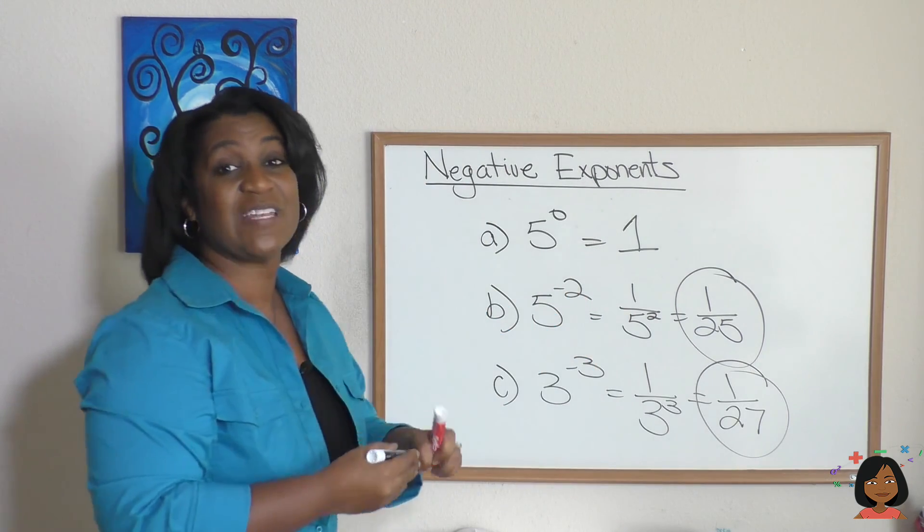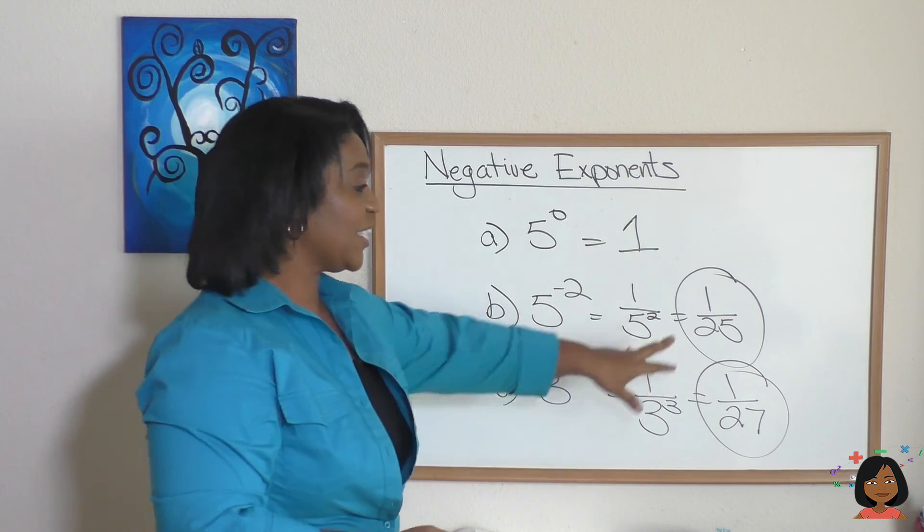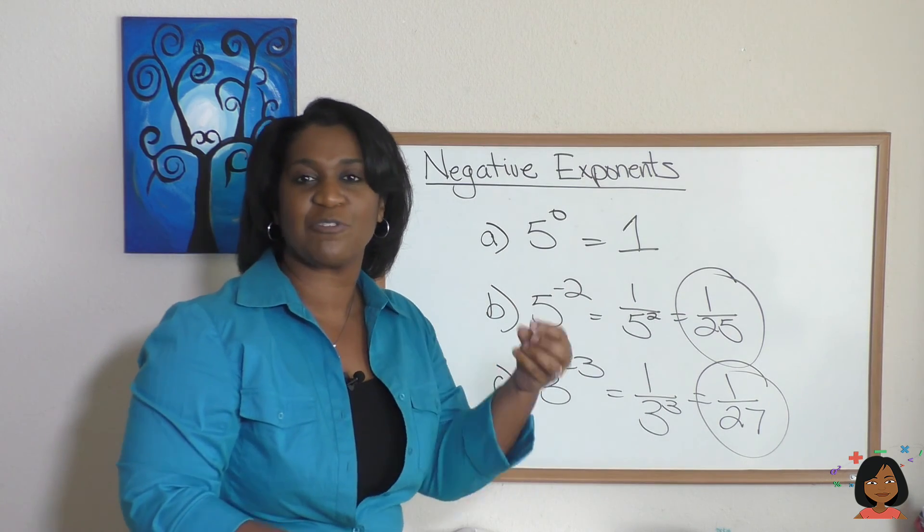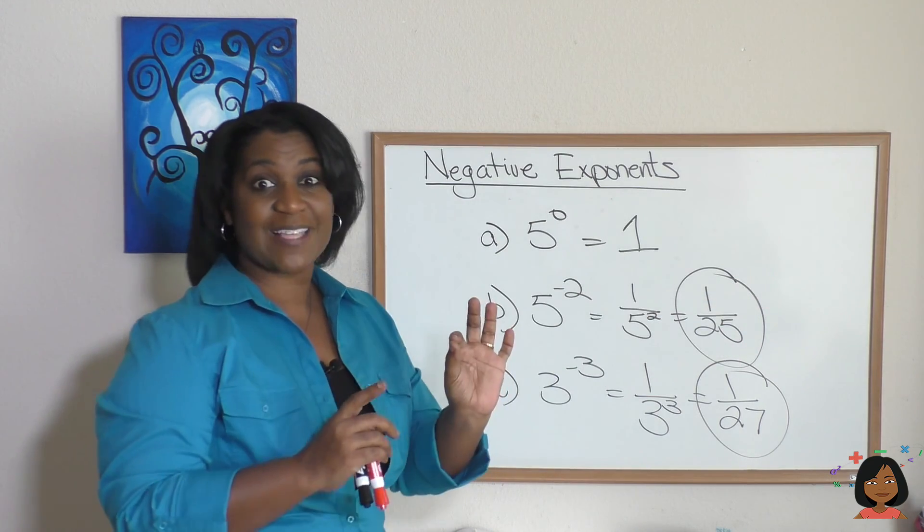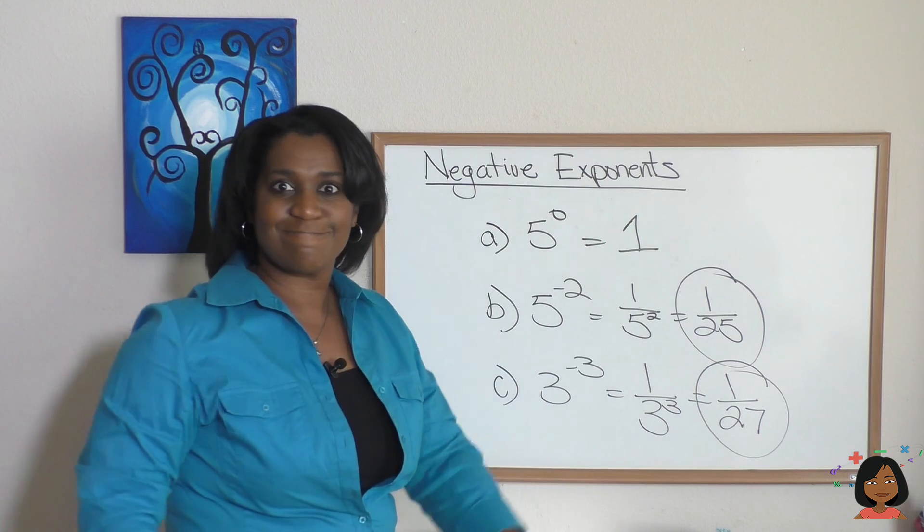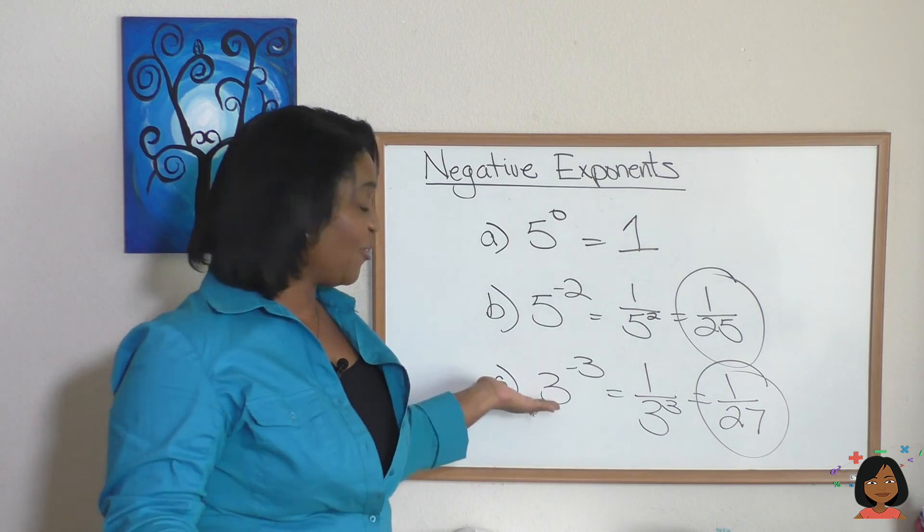So you see the idea of a negative exponent. It always gives us a fraction, a smaller number. So positive exponents give us bigger numbers. Negative exponents give us small numbers. That's it.